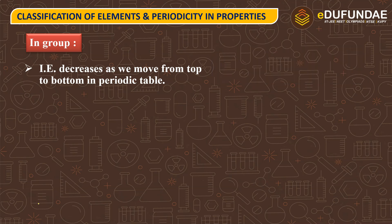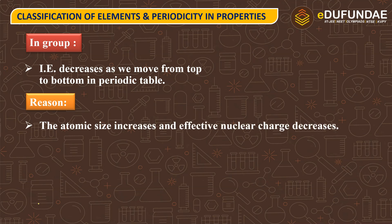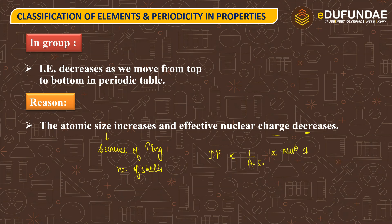Isi liye, sabse zahada reactive hootay hai. If we talk about the reason for top to bottom move, what will happen to atomic size? It will increase, because of the increasing number of shells. And if we talk about top to bottom move, atomic size will increase — that means nucleus and electron distance will increase and your nuclear charge will decrease. Since ionization potential is inversely proportional to atomic size and directly proportional to nuclear charge, if nuclear charge decreases and atomic size increases, then your ionization potential will decrease.